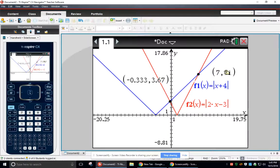So here they intersect at 7, 11, so when I plug in 7, it's going to give me 11 for both equations. And then when I plug in, it looks like negative one-third, I'll get three and two-thirds.